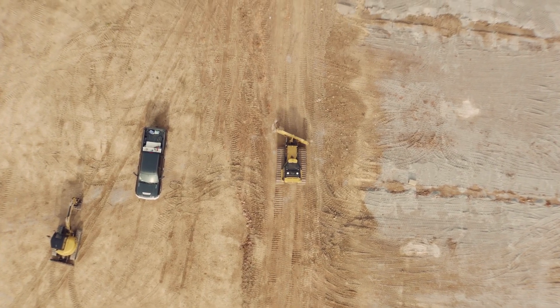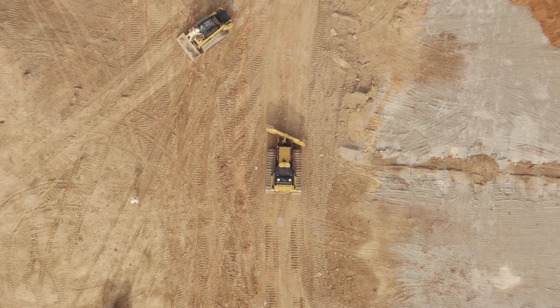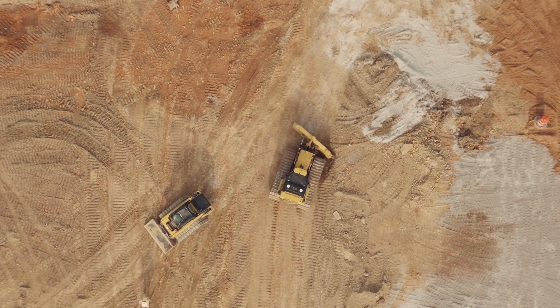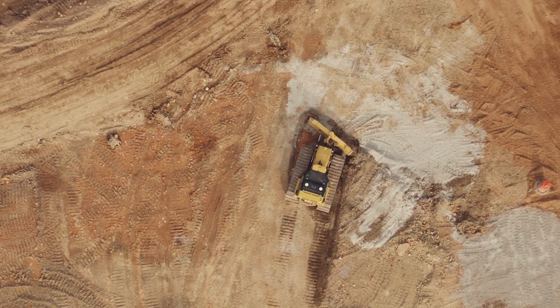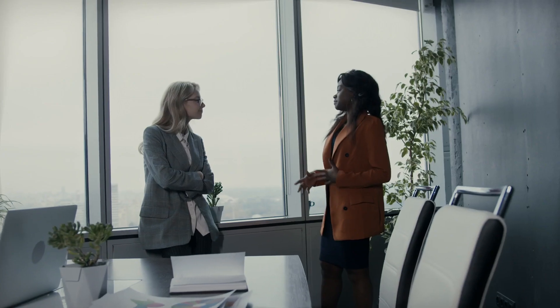Activity number three: construction of temporary facilities. In most contracts, temporary utilities and support facilities required for the project will be provided by the contractor. Based on the approved site layout plan, you will construct temporary facilities like the contractor's office, supervisors' office, drinking water, sanitary facilities, power supply, ICT services, site access roads, warning signs, enclosure fencing, waste disposal, storage, and production areas.